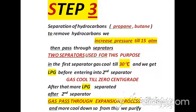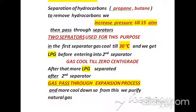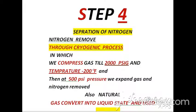Step 3 is separation of hydrocarbons. Propane and butane are separated with the help of pressure. We increase the pressure to 15 atm and then pass through separators — two separators are used. In the first separator, gas is cooled to 30°C and we get LPG. Before entering the second separator, gas is cooled to 0°C, after which more LPG is separated. After the second separator, gas passes through an expansion process and is cooled further, purifying the natural gas.